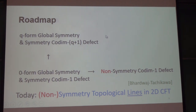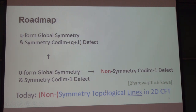Here's a little roadmap. We are very used to using zero-form global symmetry and its associated co-dimension one topological defects to constrain renormalization group flows and all other physical observables. Relatively recently there has been a lot of development on applying higher-form global symmetry to constrain the dynamics of quantum field theory, typically in higher than two dimensions. Today we want to take an orthogonal direction: we will focus on non-symmetry co-dimension one defects in two dimensions, which means they are lines.